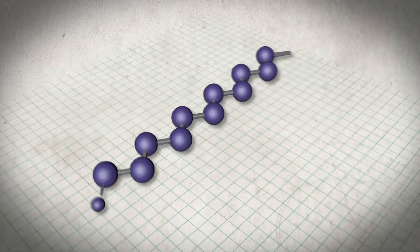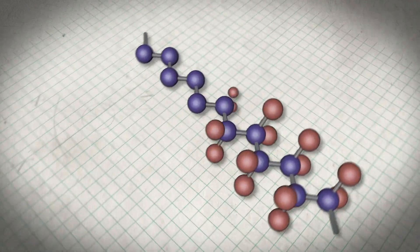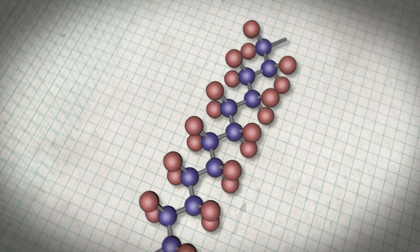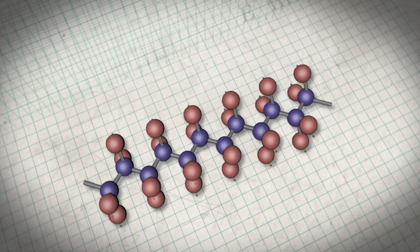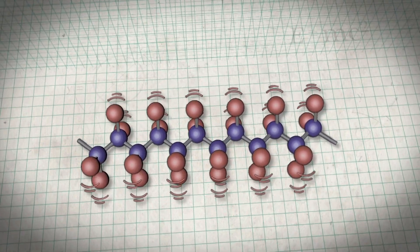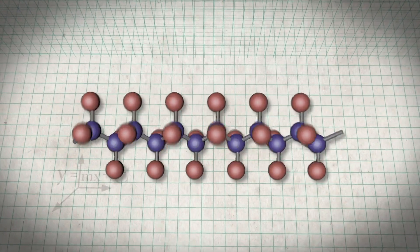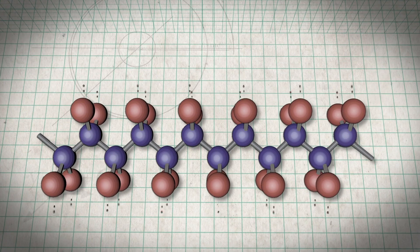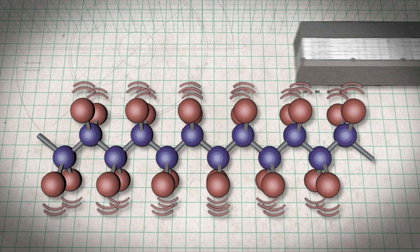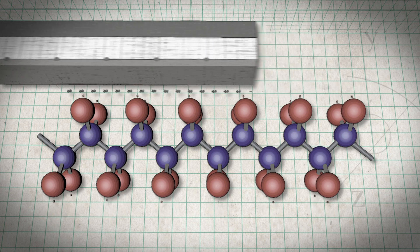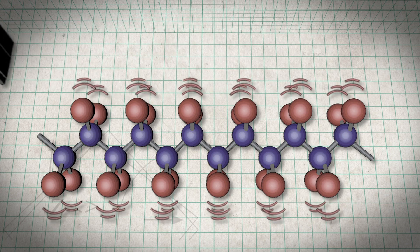PTFE is made solely of carbon and fluorine atoms. Fluorine has the highest electronegativity of any element, repelling all other atoms. The fluorine wraps around the carbon, so it's unable to react to anything. As a substance, it is therefore highly unreactive and creates almost zero friction.